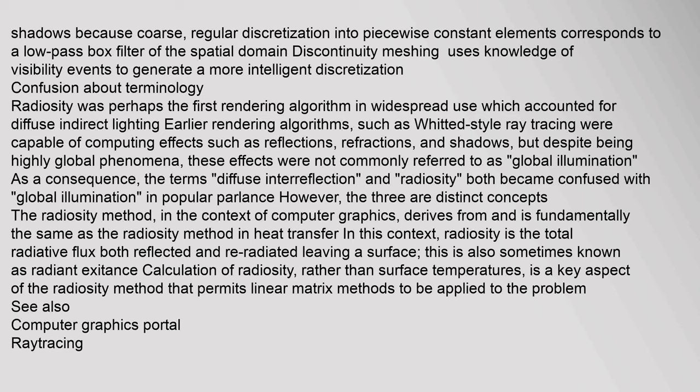Confusion about terminology: Radiosity was perhaps the first rendering algorithm in widespread use which accounted for diffuse indirect lighting. Earlier rendering algorithms such as Whitted-style ray tracing were capable of computing effects such as reflections, refractions, and shadows, but despite being highly global phenomena these effects were not commonly referred to as global illumination. As a consequence, the terms diffuse interreflection and radiosity both became confused with global illumination in popular parlance. However, the three are distinct concepts. In the context of computer graphics, radiosity derives from and is fundamentally the same as the radiosity method in heat transfer, where radiosity is the total radiative flux — both reflected and re-radiated — leaving a surface, also sometimes known as radiant exitance.